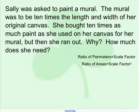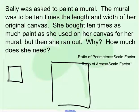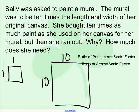Let's try this on a couple of examples. Sally was asked to paint a mural. The mural was to be 10 times the length and width of her original canvas. Maybe she started with a 1 foot by 1 foot square. Her new canvas, with length and width being 10 times, would have a side length of 10 feet. So the ratio of the perimeters is 10 over 1, and the perimeter scale factor is 10.